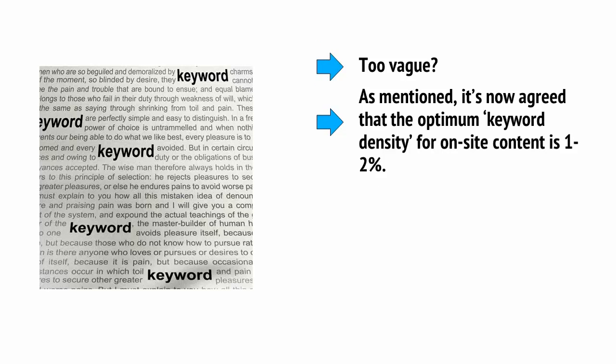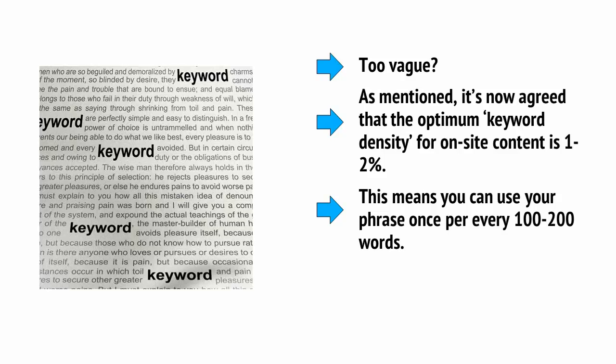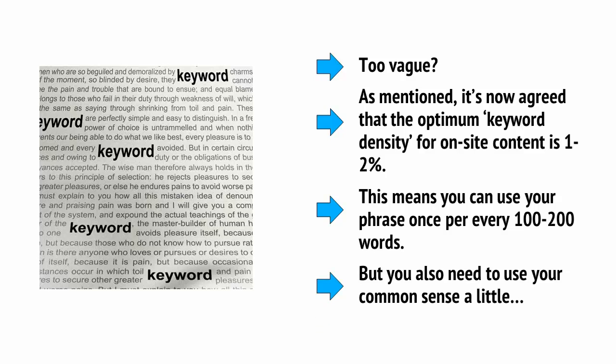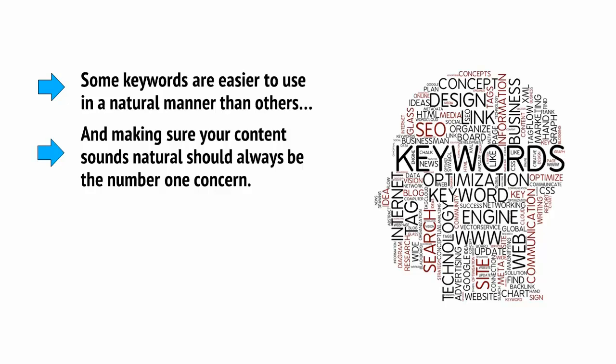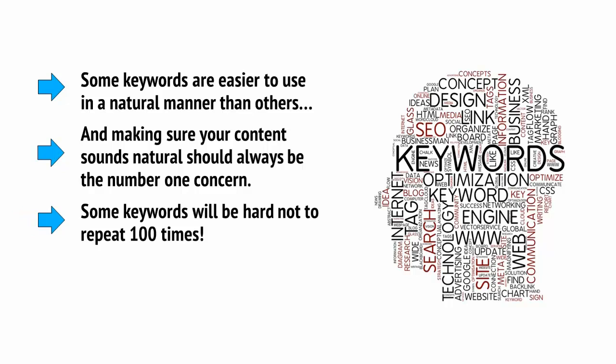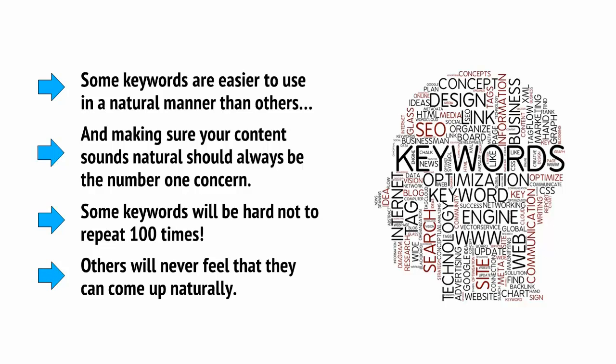One of the first things you're going to need to do is fill your site with great content and use your keywords throughout. There's a fine line to be walked here. You need to repeat the phrase a few times to create that association, but you also need to make sure you don't overdo it and appear to be spamming. It's now agreed that the optimum keyword density for on-site content is 1-2%, meaning you can use your phrase once every 100-200 words. Some keywords are easier to use naturally than others, and making sure your content sounds natural should always be the number one concern.